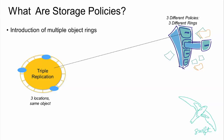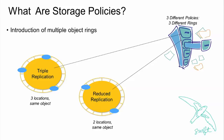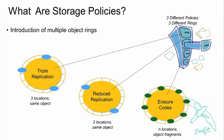Here's an example: three different rings, three different policies. First: triple replication — you get three locations from your ring when you store or retrieve a file. With storage policies, you can also do reduced replication — only specify two locations. The difference from today is that two-times and three-times replication can coexist in the same cluster, and your application can decide which level of replication it wants. And coming soon: erasure codes. The ring will store the location of all data and parity information, giving you multiple locations back from the erasure code policy ring.